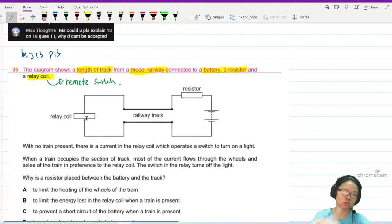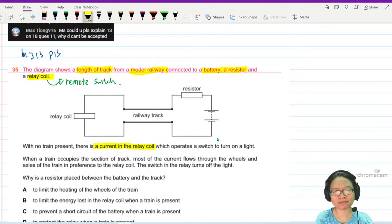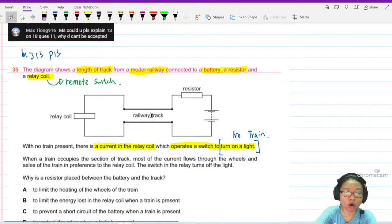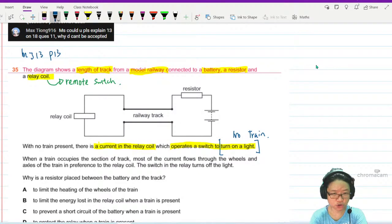If there is a current, then the switch will turn on. No current, switch doesn't turn on. With no train present, there is a current in the relay coil. In fact, they tell you how the relay coil behaves - it operates a switch to turn on a light. So basically we turn on the light when there is no train. Read the problem first: when a train occupies a section of the track, let's say I put a train here.